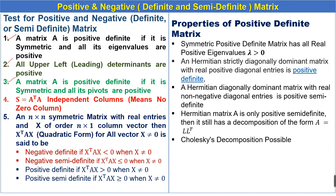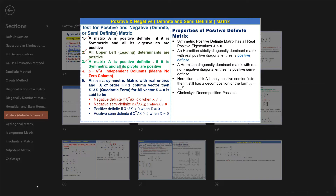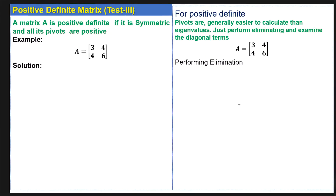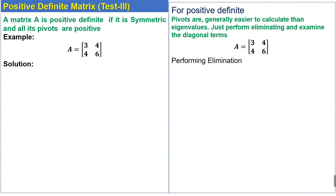The third test states that a matrix A is positive definite if it is symmetric and all its pivots are positive. So we have an example related to the third test: a matrix is positive definite if it is symmetric and all its pivots are positive. First we check the symmetry of the matrix — whether the given matrix is symmetric or not.